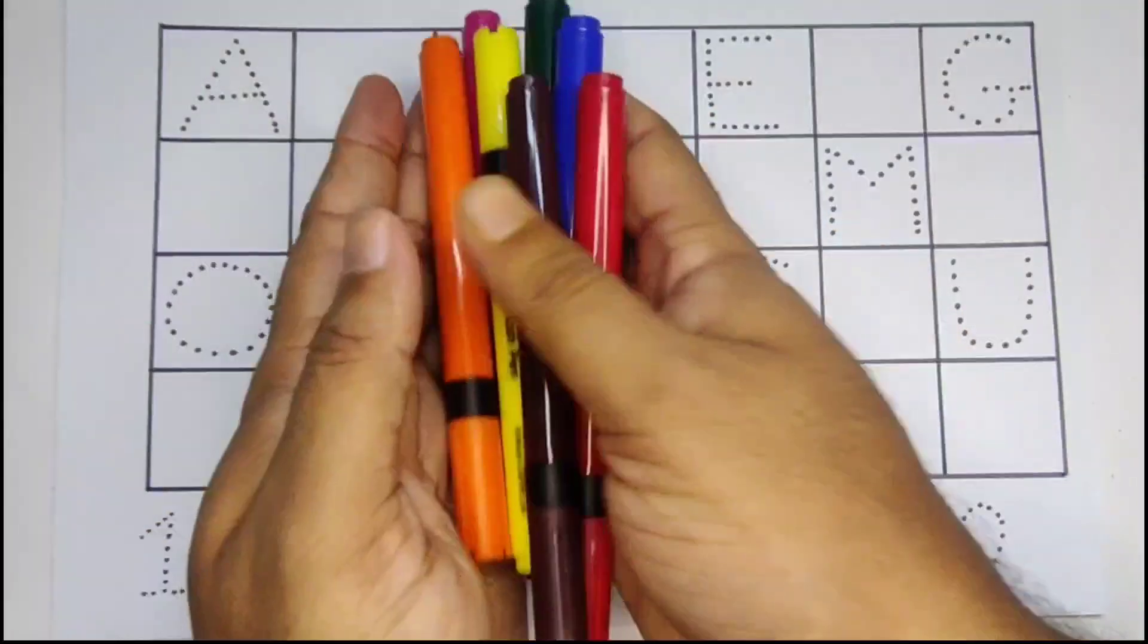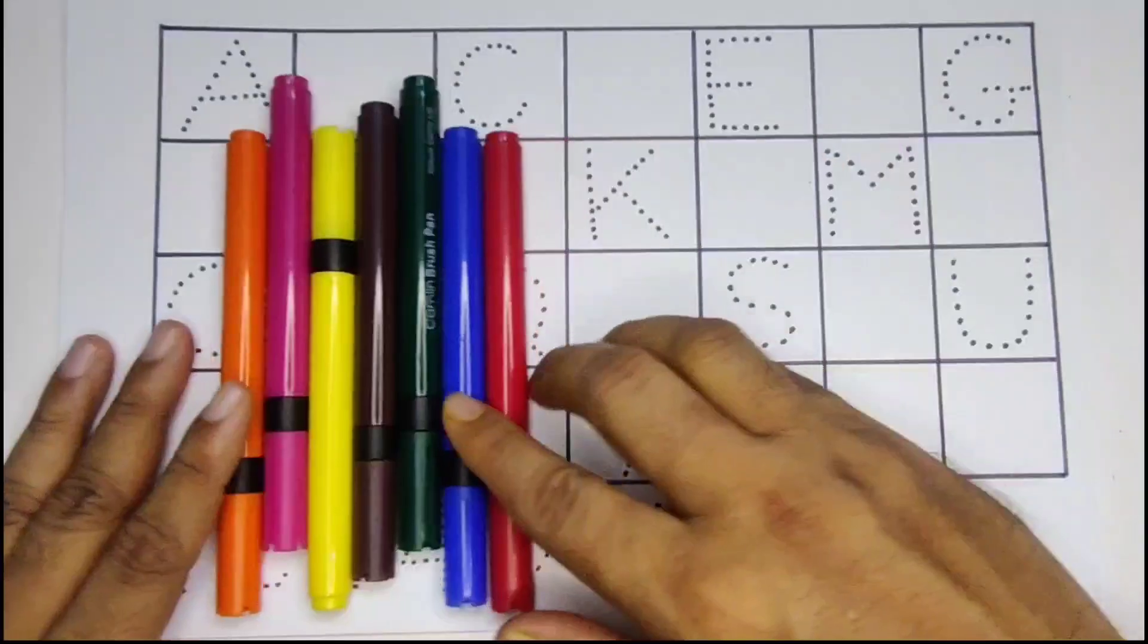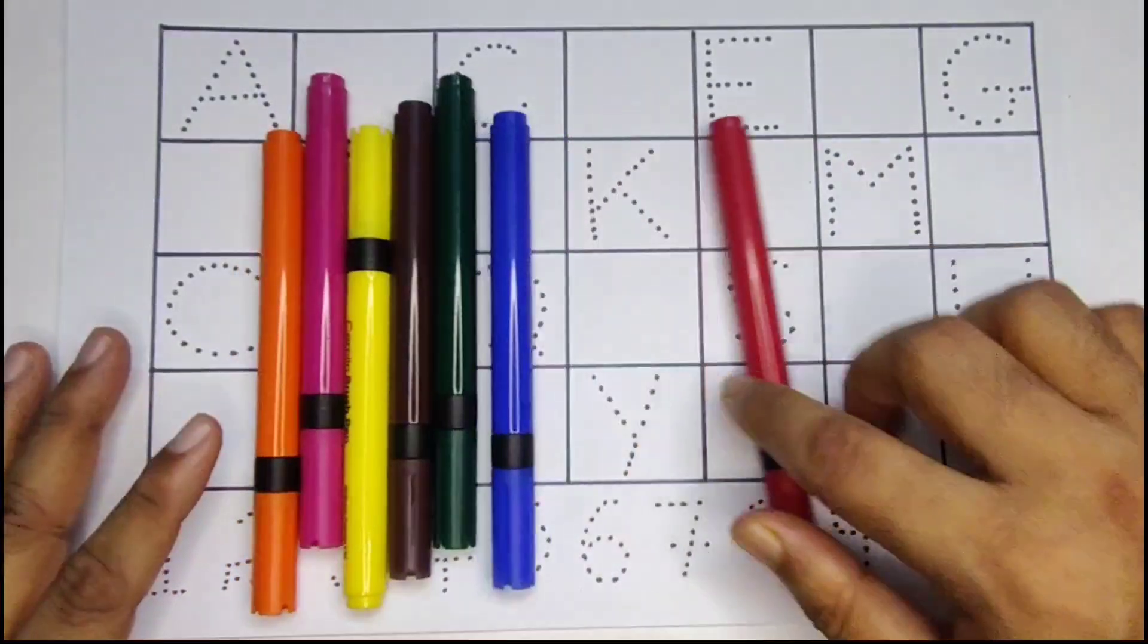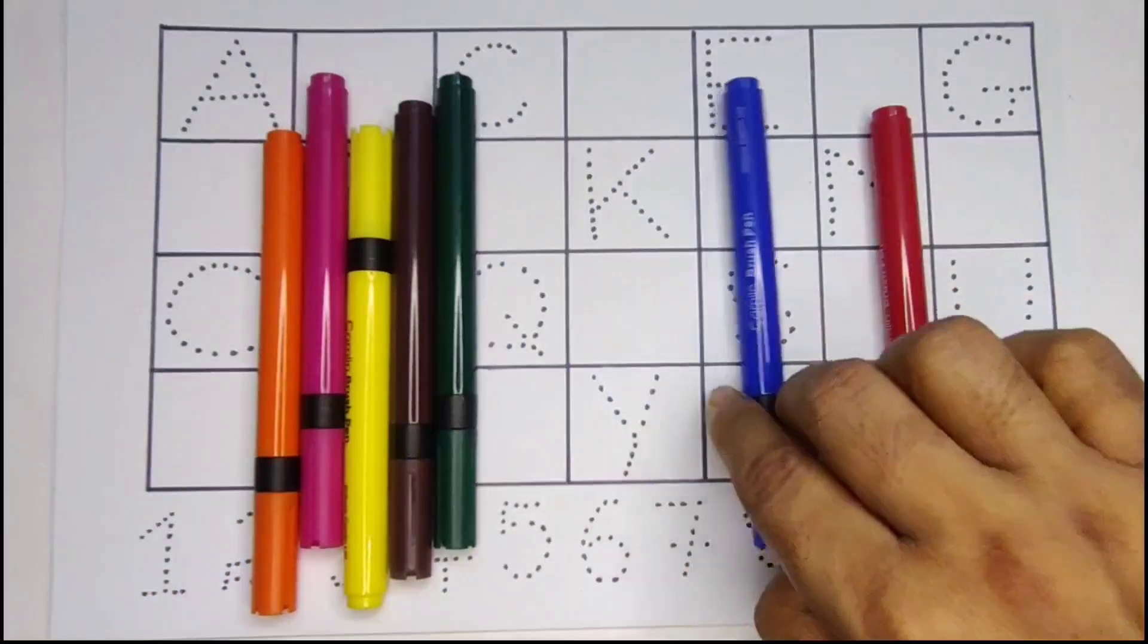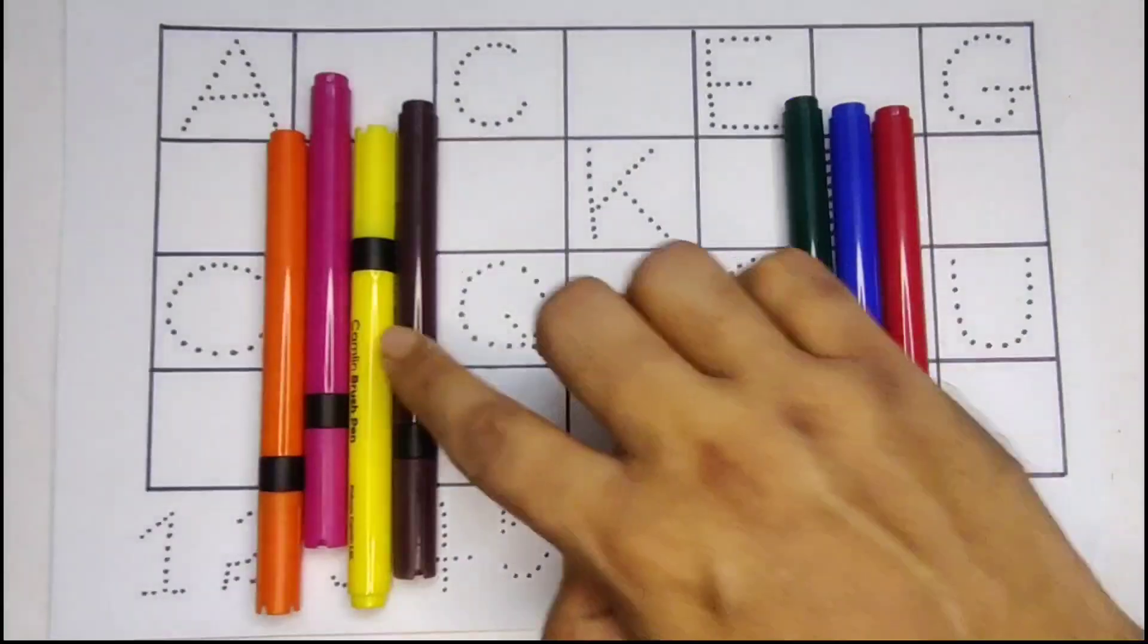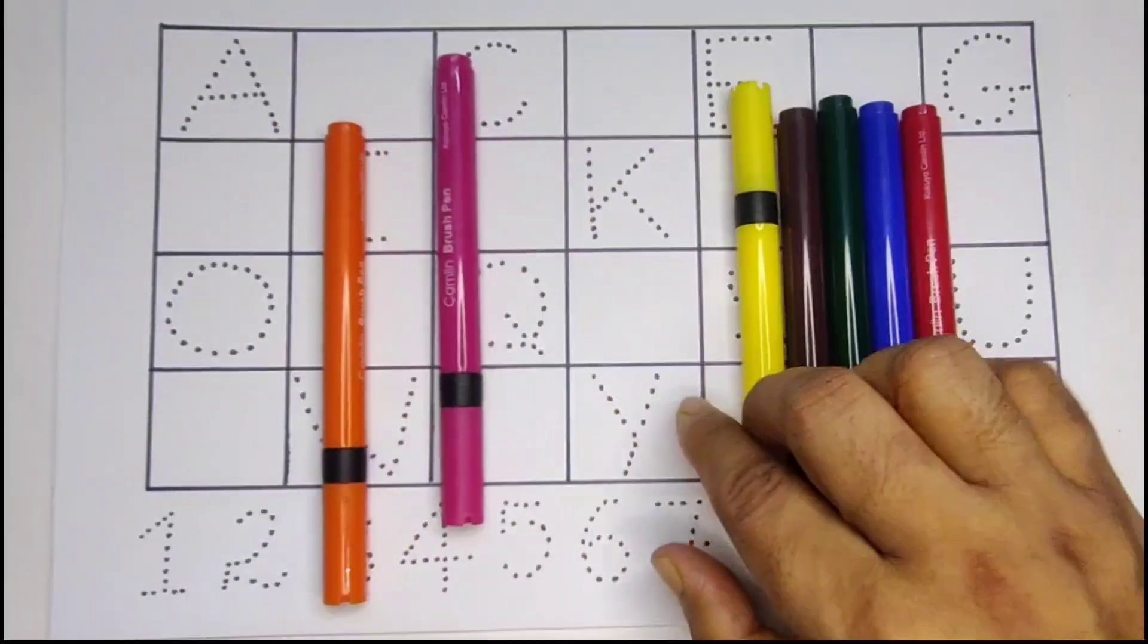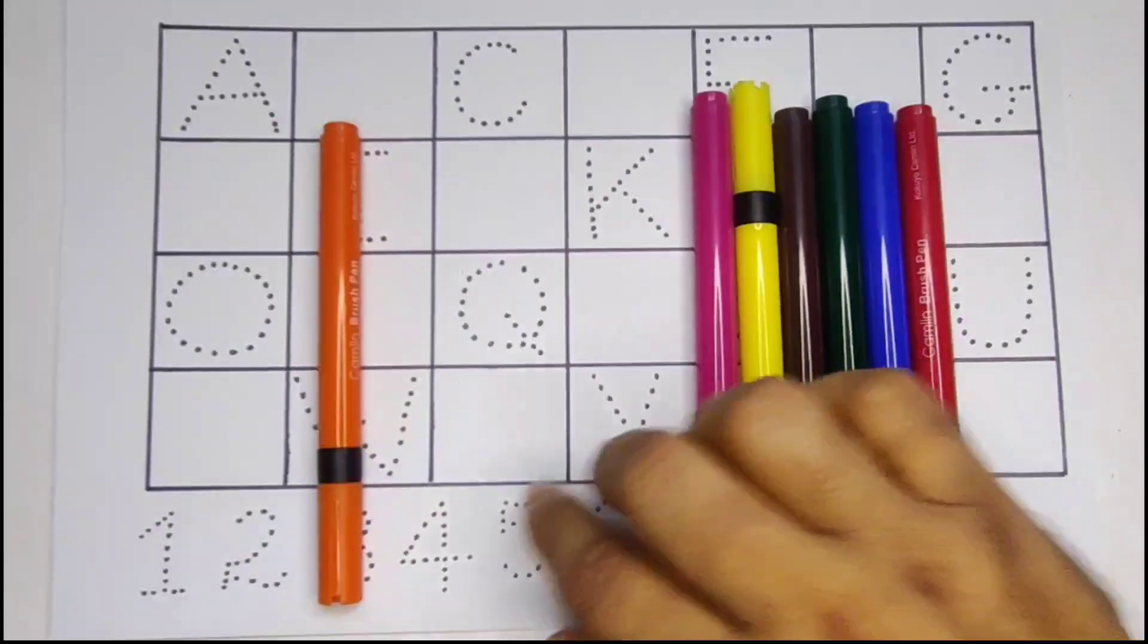Hello kids! First, learn the colors: red color, blue color, green color, chocolate color, yellow color, pink color, and orange color.